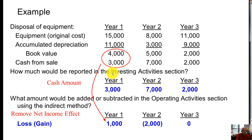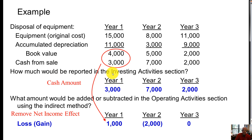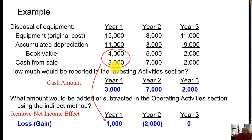What amount would be added or subtracted in the operating activity section using the indirect method? It would be the gain or loss from the sale, which affects net income. If book value is greater than cash, we have a loss — add it back. If cash from sale exceeds book value, we have a gain — subtract it out. In year one, we had a $1,000 loss — add it back. In year two, subtract a $2,000 gain. In year three, there was no gain or loss, so no adjustment needed. The gain or loss goes in operating because it affects net income, but the cash from the sale of a long-term asset is reported directly in the investing section.